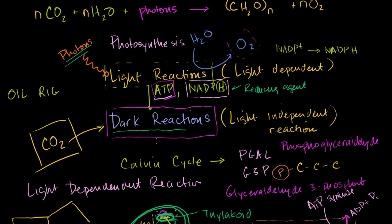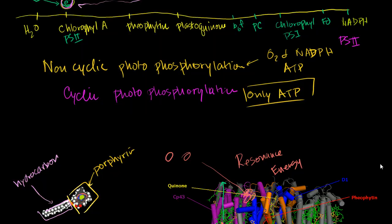The reason why they call it the dark reactions is that they're light independent. They don't require photons. They only require ATP, NADPH, and carbon dioxide. So let's understand what's going on here a little bit better, so let me go down to where I have some clean space. So we had our light reactions, and they produced ATP and NADPH. And now we're going to take some carbon dioxide from the atmosphere.